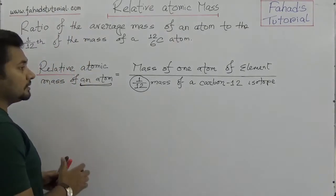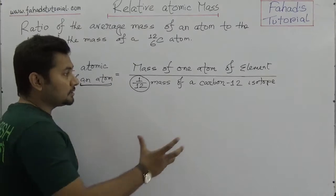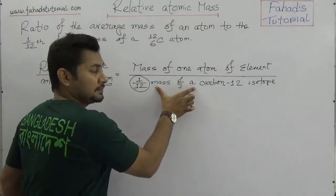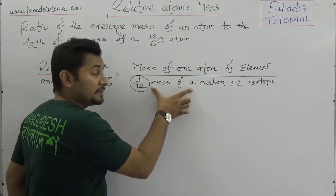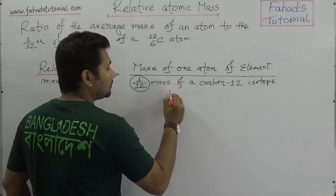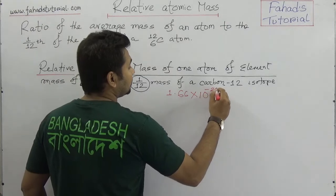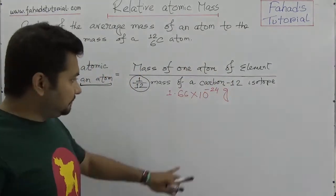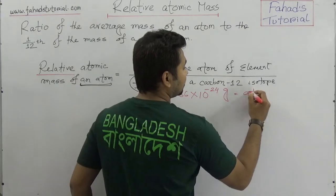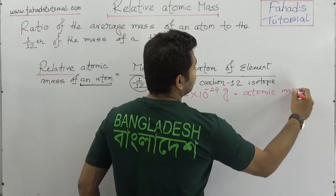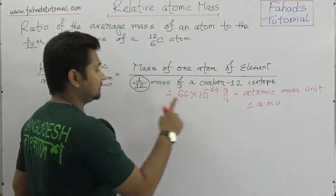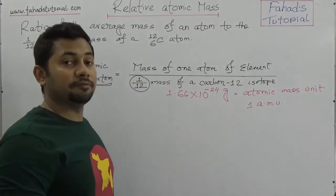That is why this is a fixed value, because we are considering all atomic masses — relative atomic masses — based on this. So this is the base. One-twelfth of the carbon-12 isotope mass is 1.66 × 10⁻²⁴ grams. And this is called the atomic mass unit.